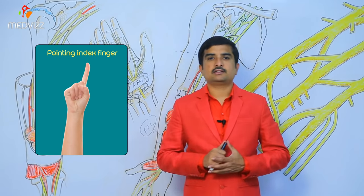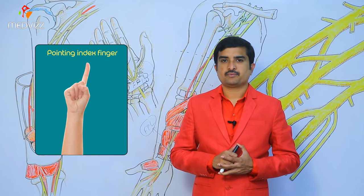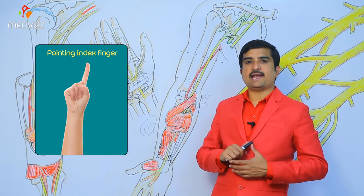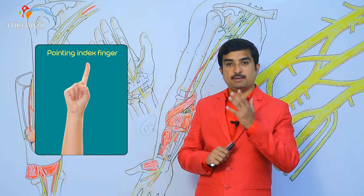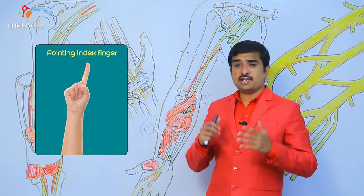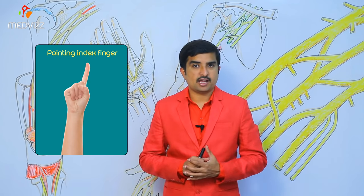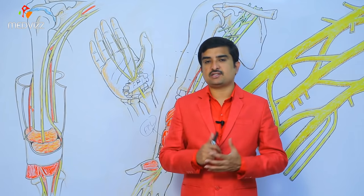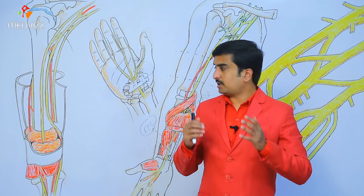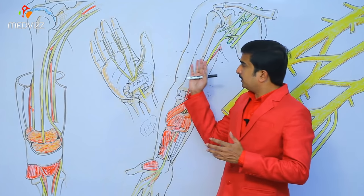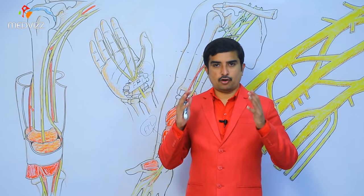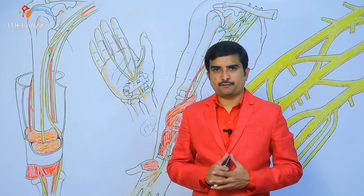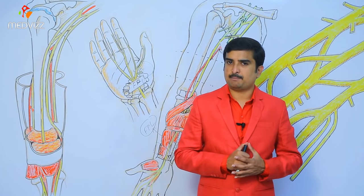The pointing index finger deformity occurs because flexion at the interphalangeal joints of the index and middle fingers is lost, leaving them straight while making a fist. Vasomotor and trophic changes include warm, dry, scaly skin and brittle nails over the lateral three digits, due to arteriolar dilation and edema.